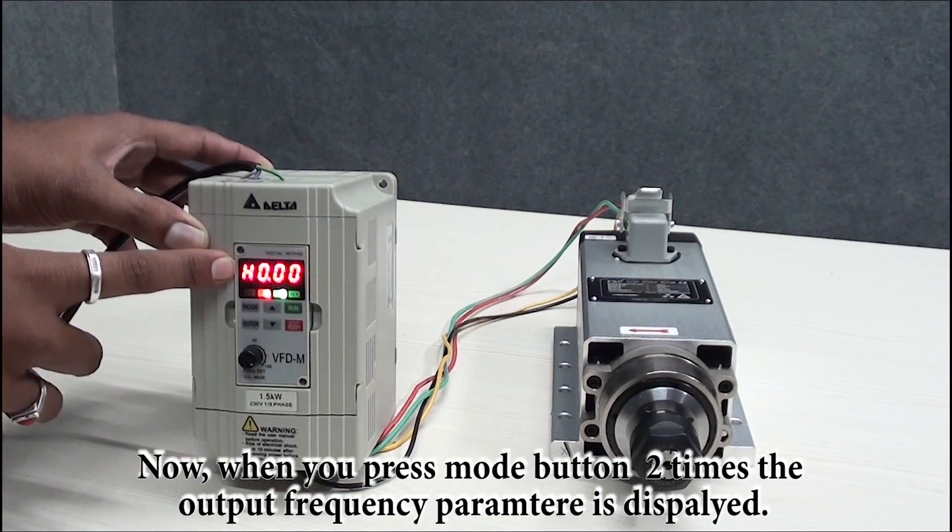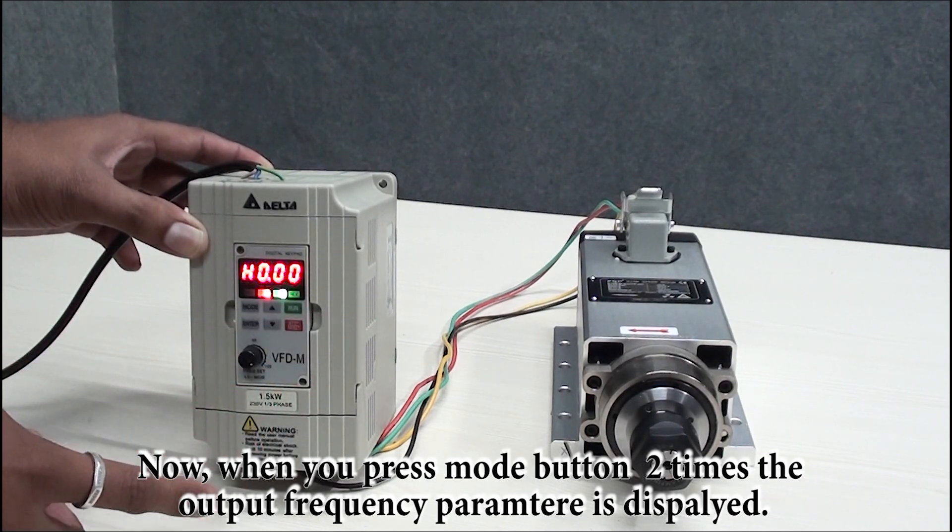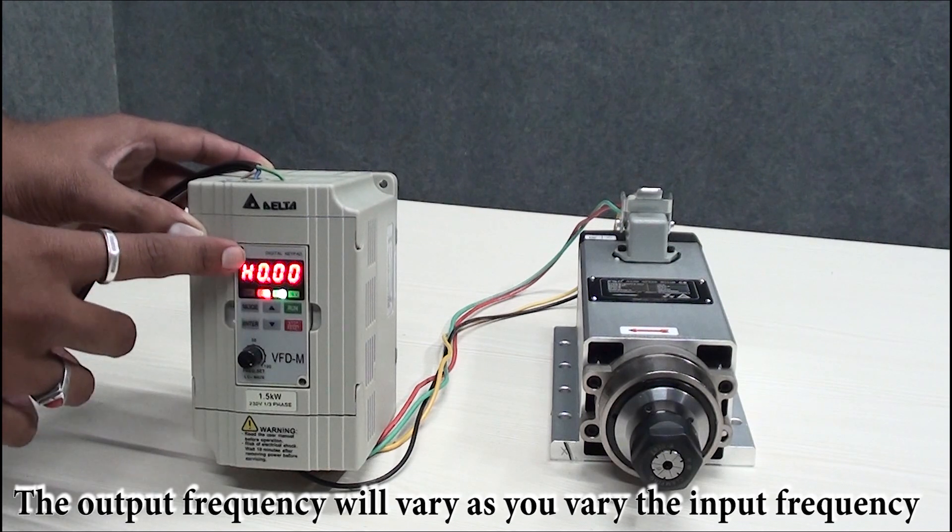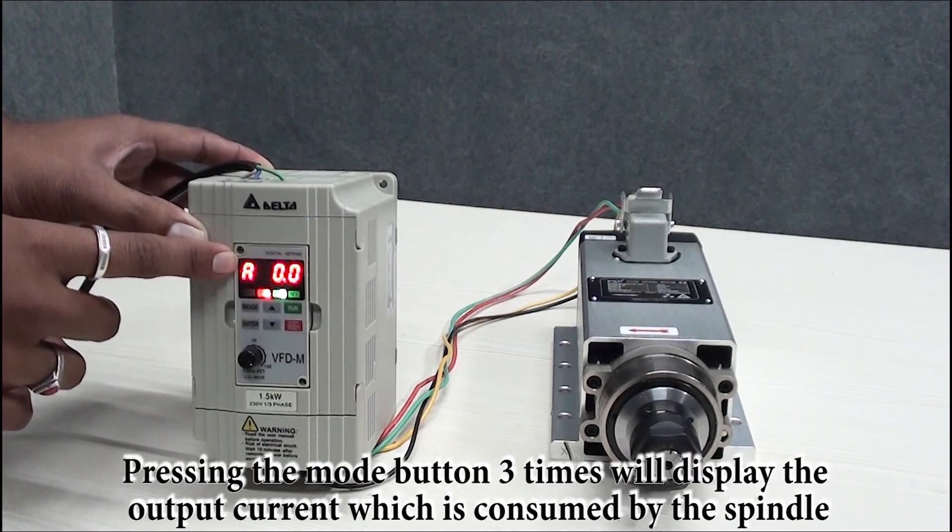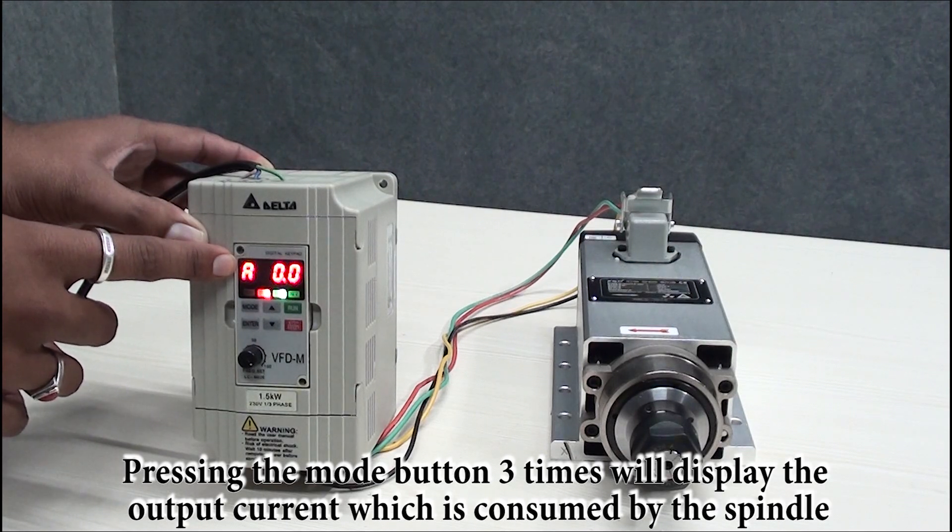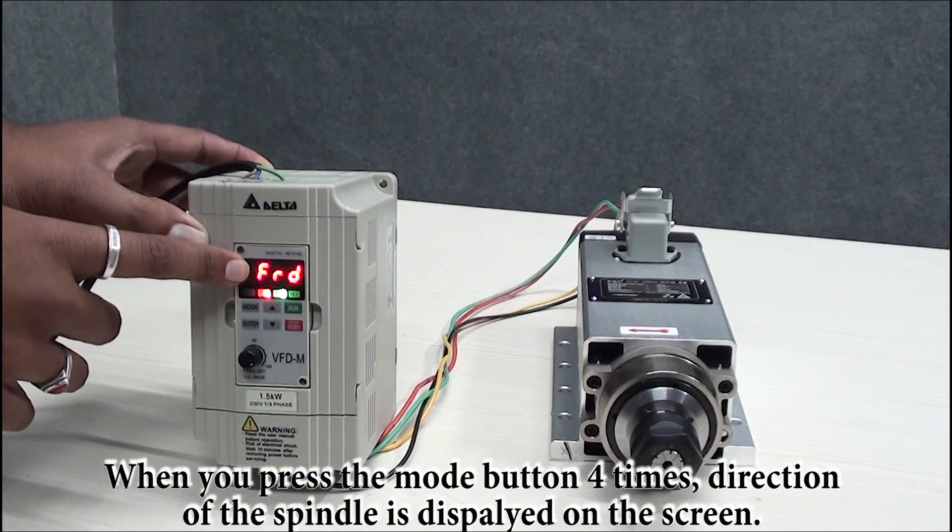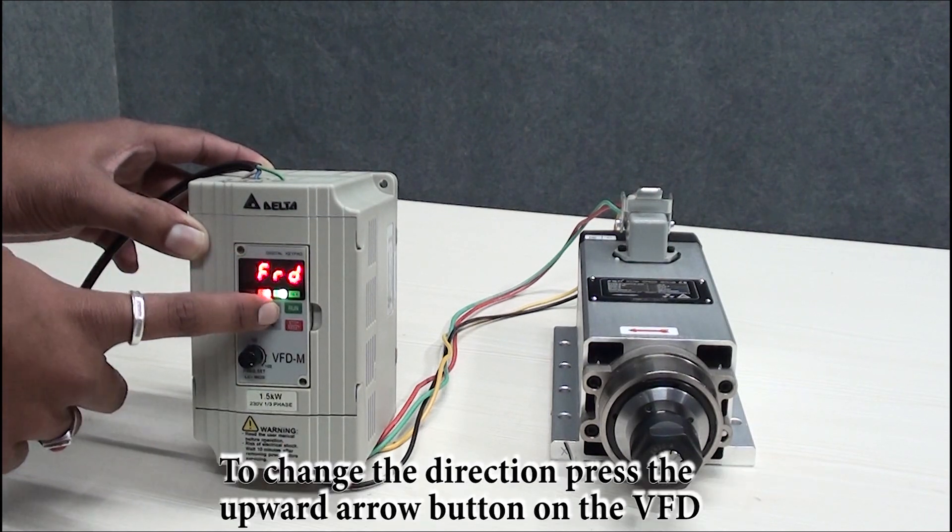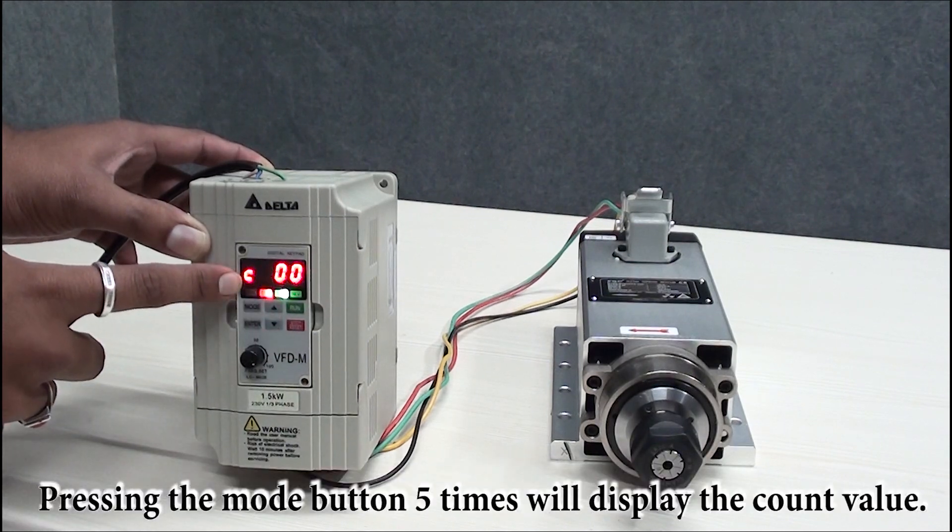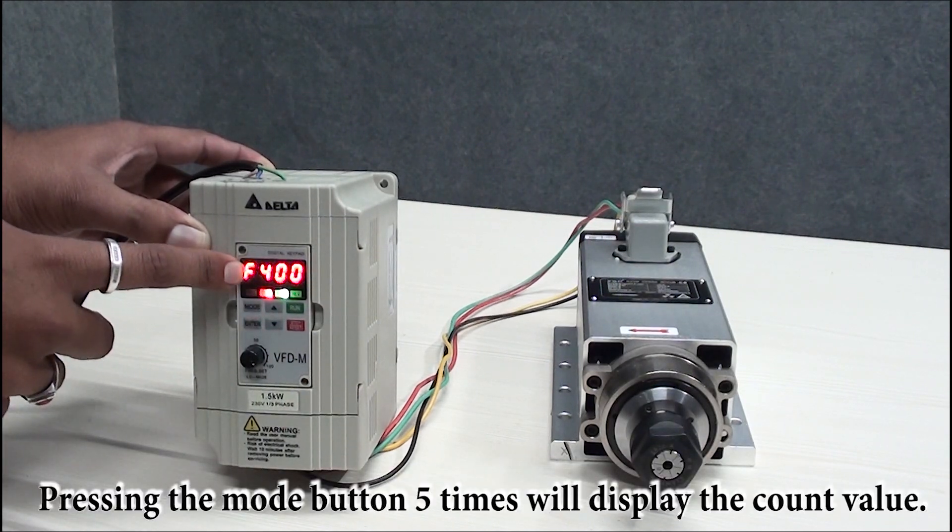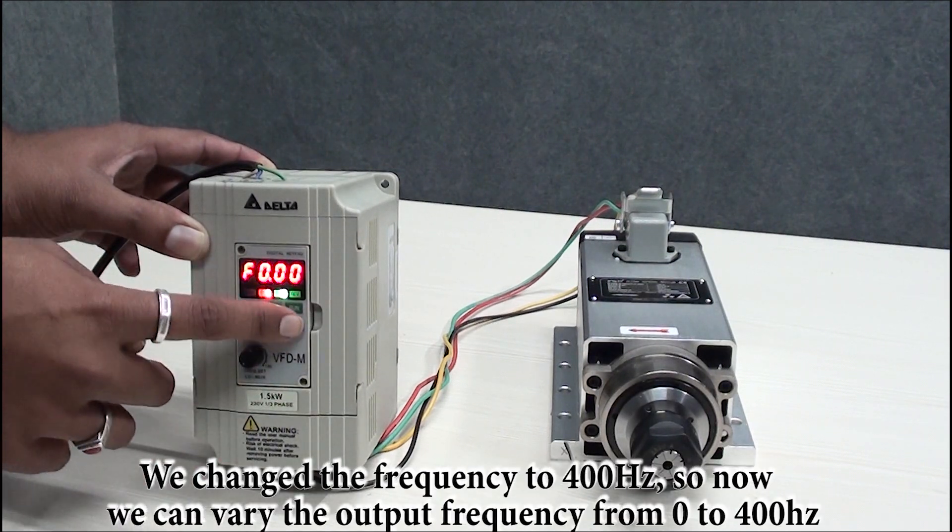Press mode button again. H is the output frequency which will be supplied to spindle by VFD at the output U, V, W. It will vary as you vary the input frequency which is master frequency. A is the current, it will show the output current of the spindle which is consumed by spindle. Direction will show FRD means forward direction. As you change from here, REV will be reverse direction. C is for counter value.